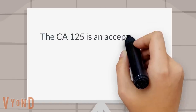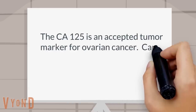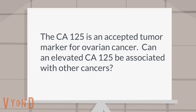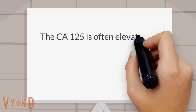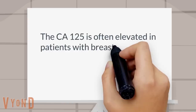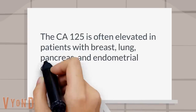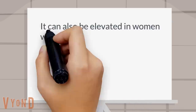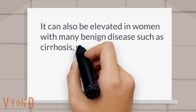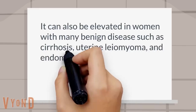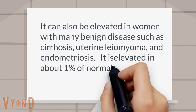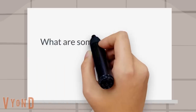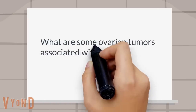The CA-125 is an accepted tumor marker for ovarian cancer. Can an elevated CA-125 be associated with other cancers? The CA-125 is often elevated in patients with breast, lung, pancreas, and endometrial cancer. It can also be elevated in women with many benign diseases such as cirrhosis, uterine leiomyoma, and endometriosis. It is elevated in about one percent of normal healthy women as well.